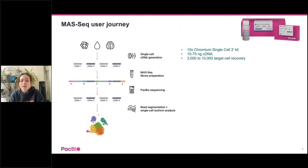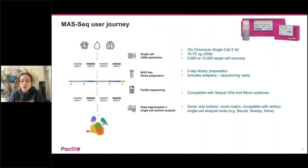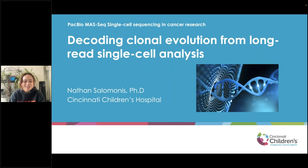MOS-Seq is now a PacBio kit called the MOS-Seq for 10X Single Cell Three-prime Kit. It is compatible with cDNA generated from the 10X Chromium, 15 to 75 nanograms of cDNA, and is suitable for a cell library of 3,000 to 10,000 cells. It takes two days for library preparation and is sequencing ready. It is compatible with Sequel II, 2E, and Revio systems. Our SMRT Link generates gene and isoform count matrices compatible with tertiary tools such as Seurat, Scanpy, and KANA. And now I'll welcome Nathan to present his part of the talk.